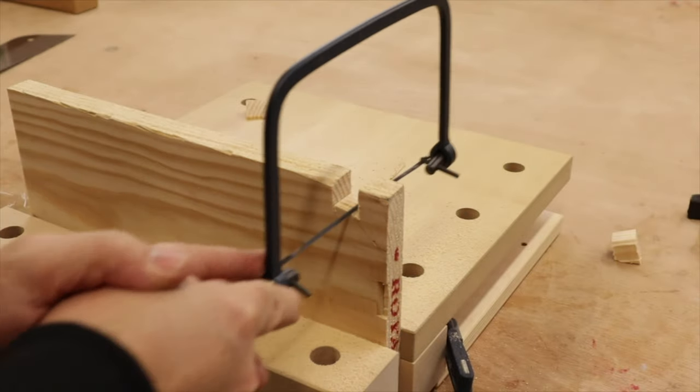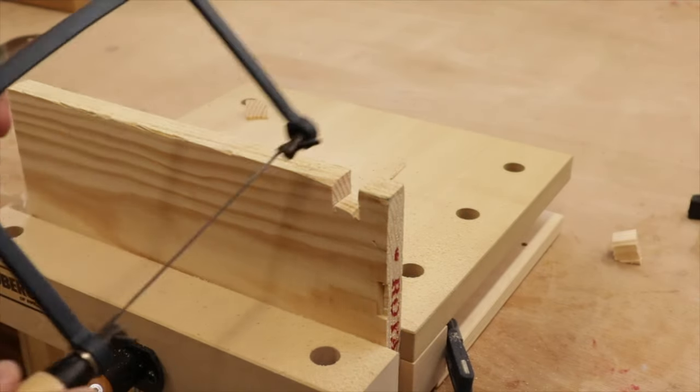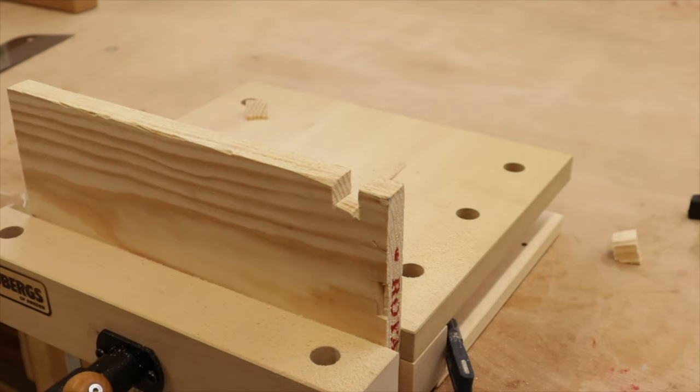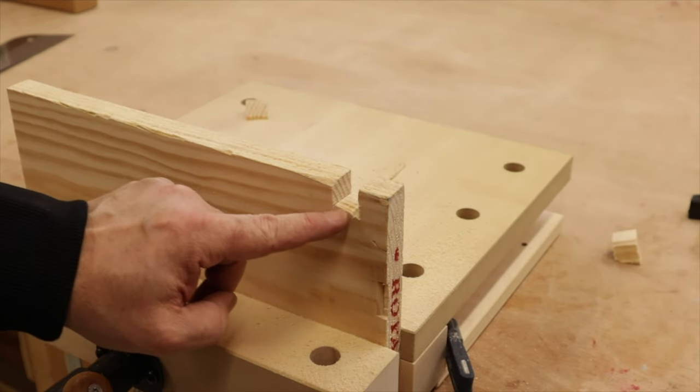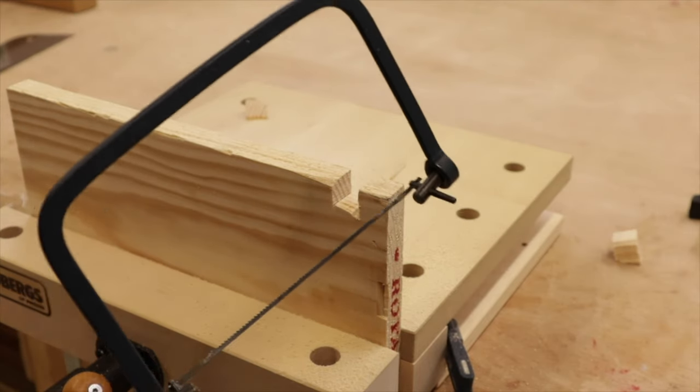There you go, that's the waste removed, and then you can come back in and go back the other way until you've got it exactly where you need it to go. But how else would you do this without a chisel? There's no other way, you've got to have a coping saw.